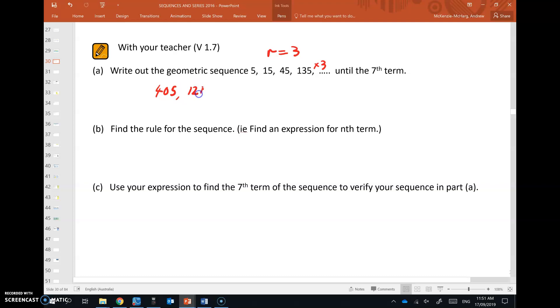1215 and that by 3 is 3645. So there are the next three terms in that sequence to get to the seventh term.